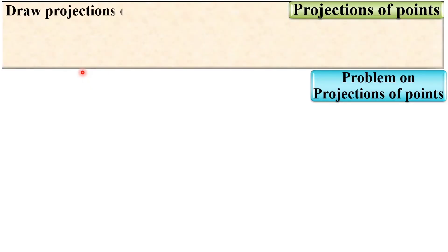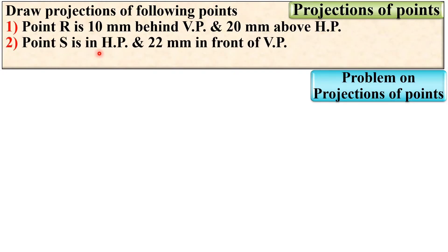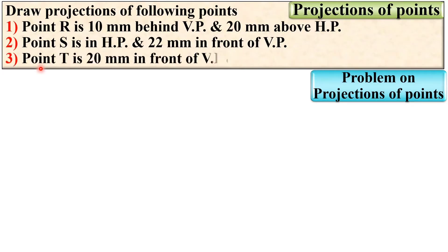Let's see first the description of the given problem. Draw projections of the following points. First, point R is 10 mm behind VP and 20 mm above HP. Second, point S is in HP and 22 mm in front of VP. And third, point T is 20 mm in front of VP and 25 mm below HP.